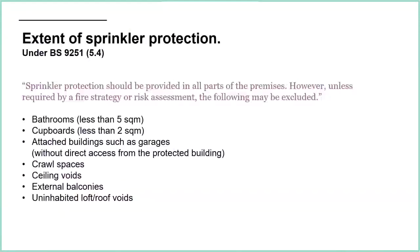The list of areas that may be excluded includes: bathrooms less than five square metres, small cupboards less than two square metres, attached buildings such as garages - but only those without direct access from the protected building - crawl spaces, ceiling voids, external balconies, and uninhabited loft or roof voids. Basically these are areas where we're not expecting a fire to start because they are generally unoccupied and there's not a lot in there.